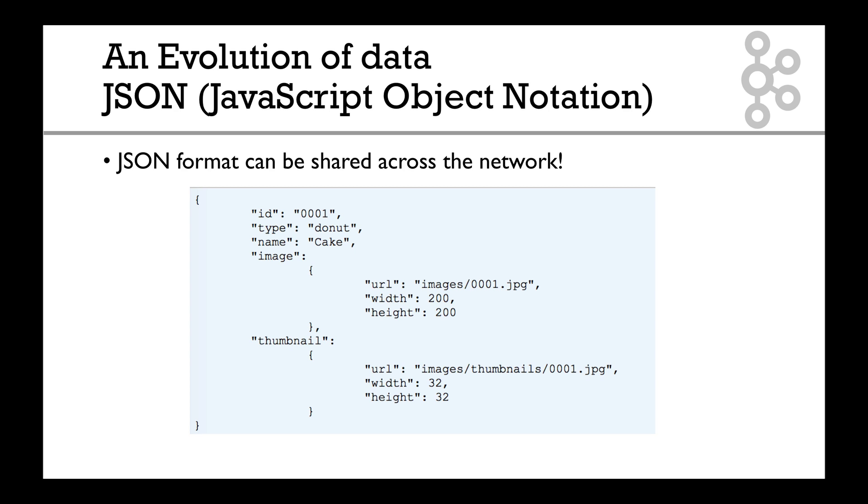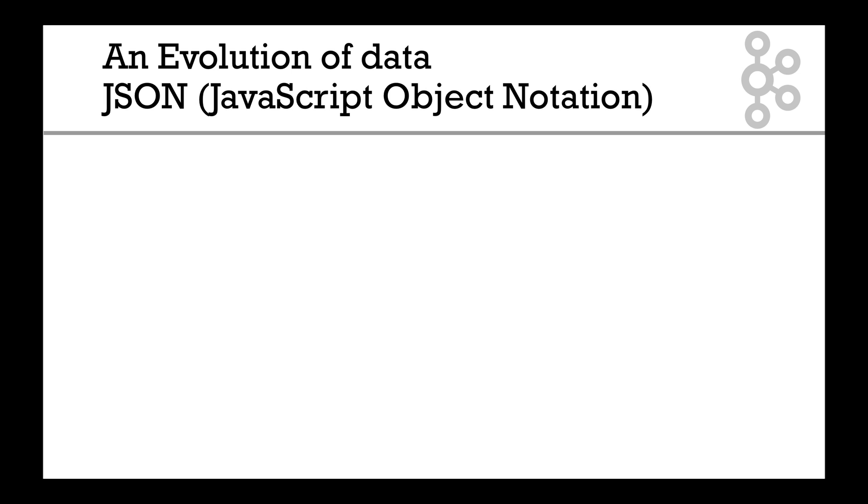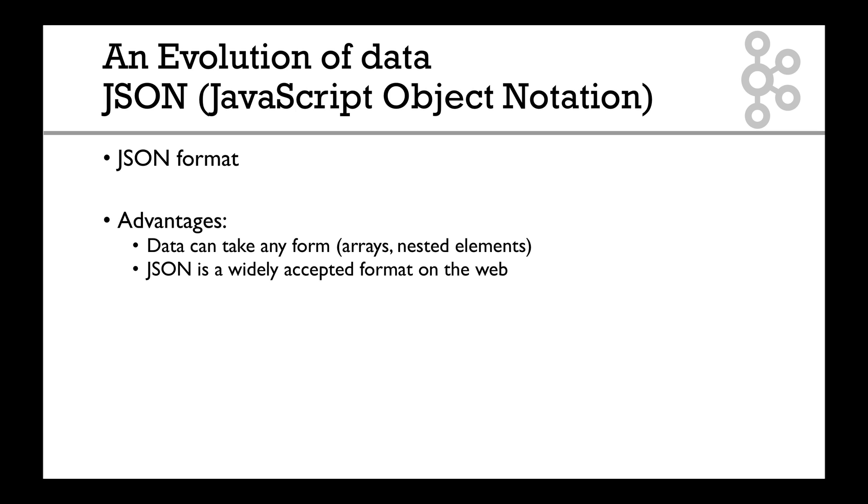It can be nested data and stuff, so it's pretty good. JSON format has advantages: number one is that data can take any form you want - it could be an array, it could be a nested element, could be whatever. JSON is widely accepted on the web. Every single language has a library to parse JSON, so that's awesome. Then it can easily be shared over a network - it's just text, it's just strings, it's easy. But there are some inconveniences.